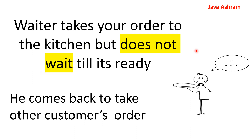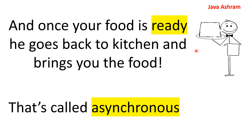The waiter takes your order to the kitchen but does not wait till it's ready. He comes back to take other customers' orders. And once your food is ready, he goes back to the kitchen and brings you the food. That's called asynchronous. This is fortunately how our restaurant works.